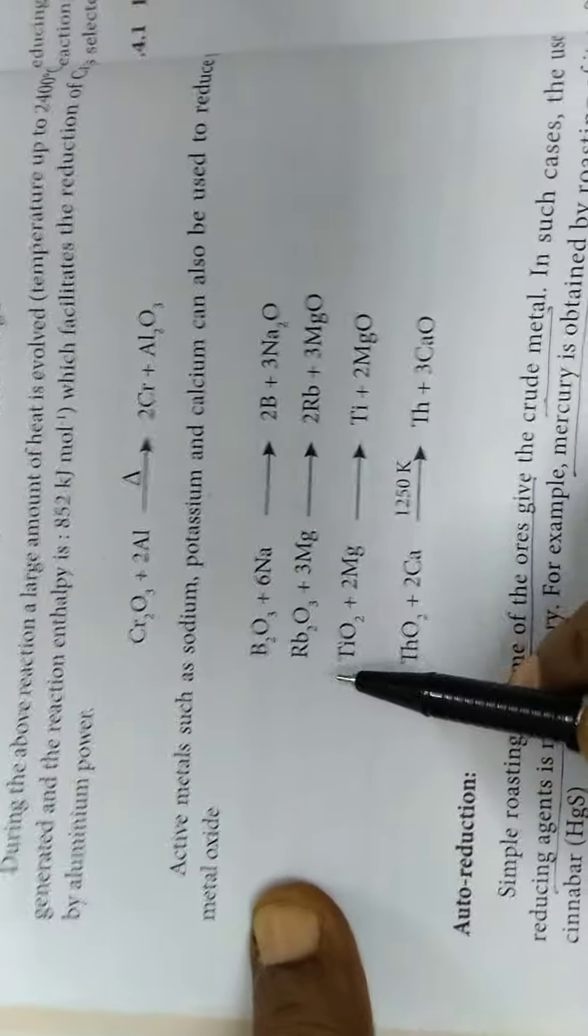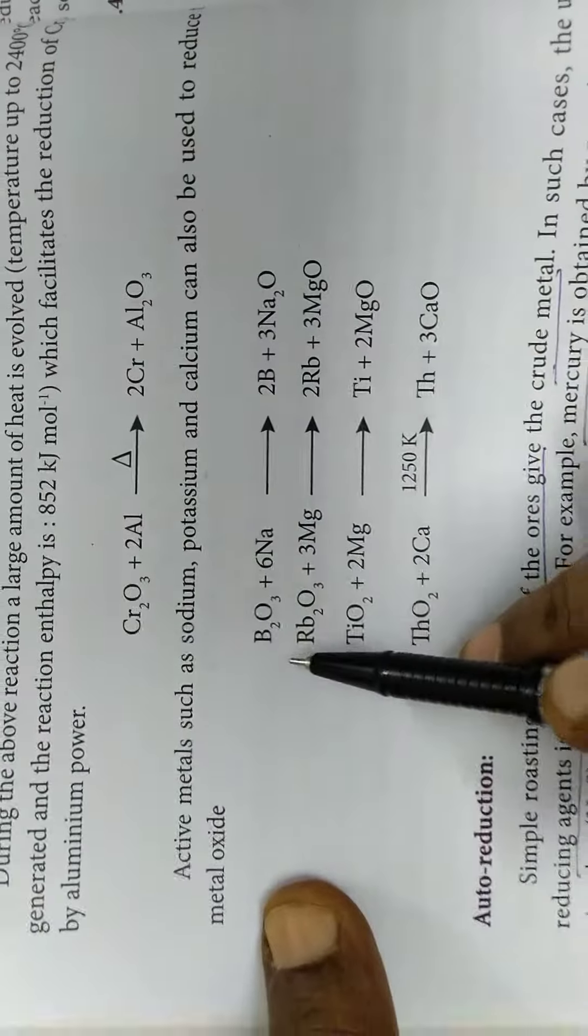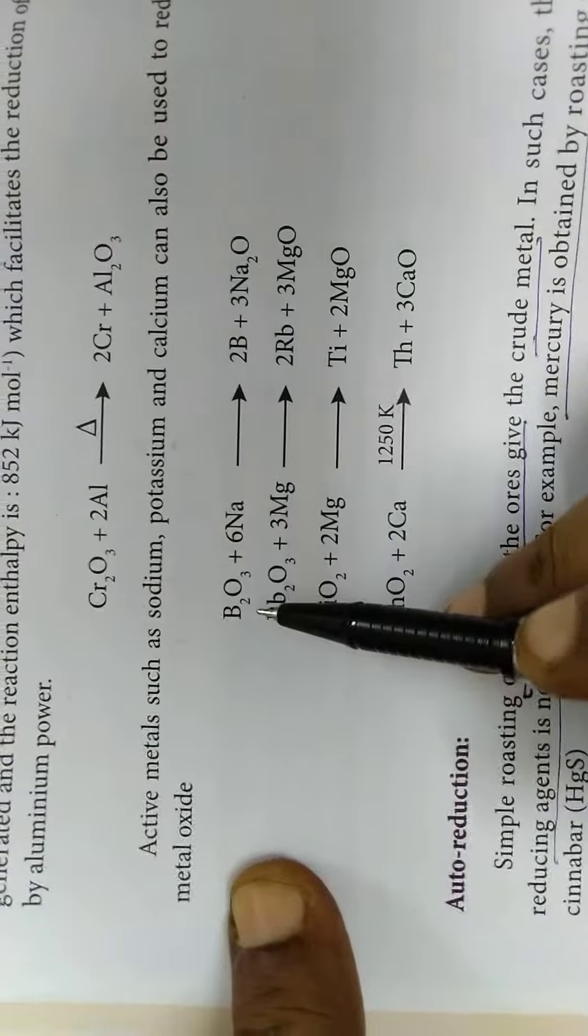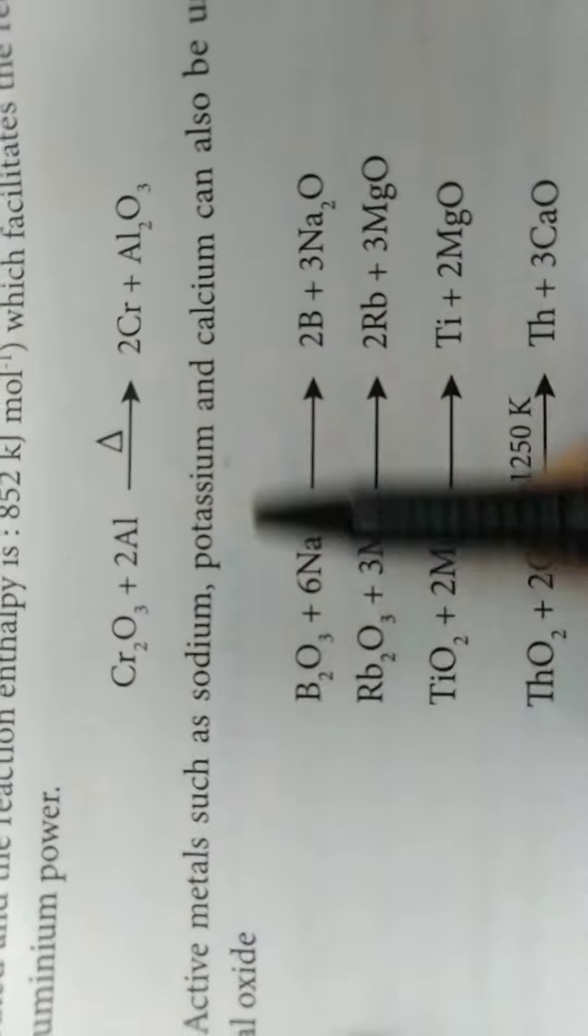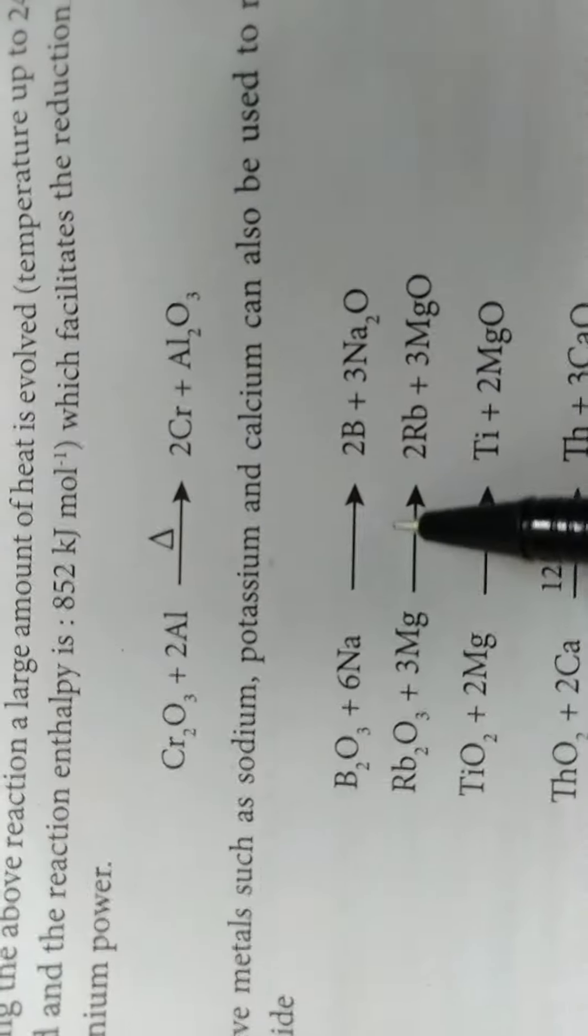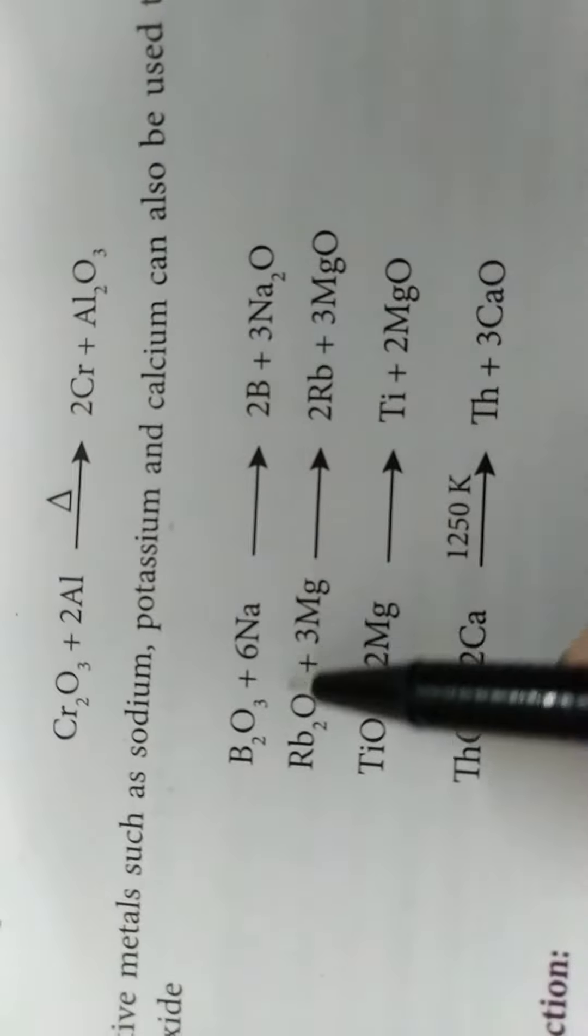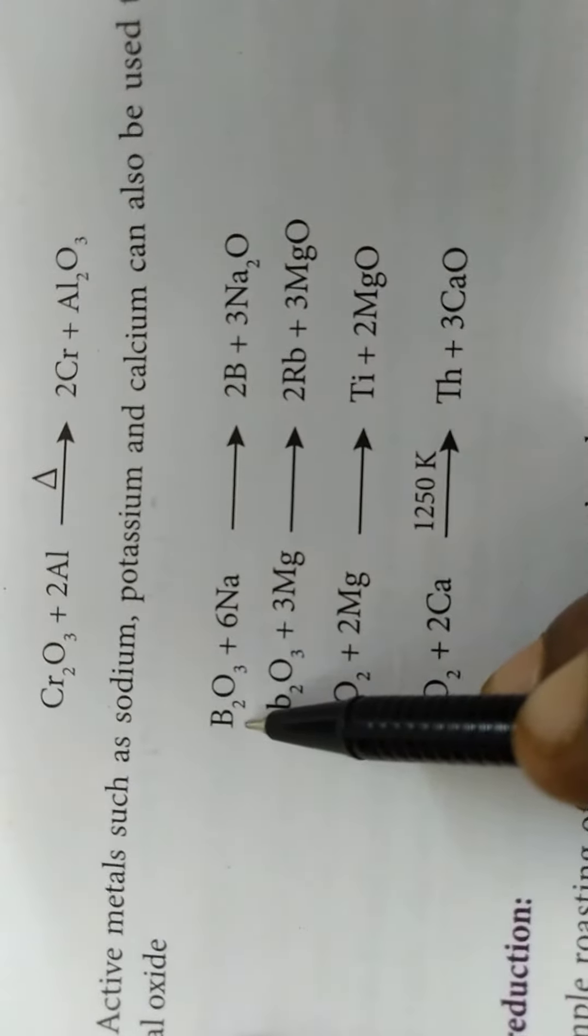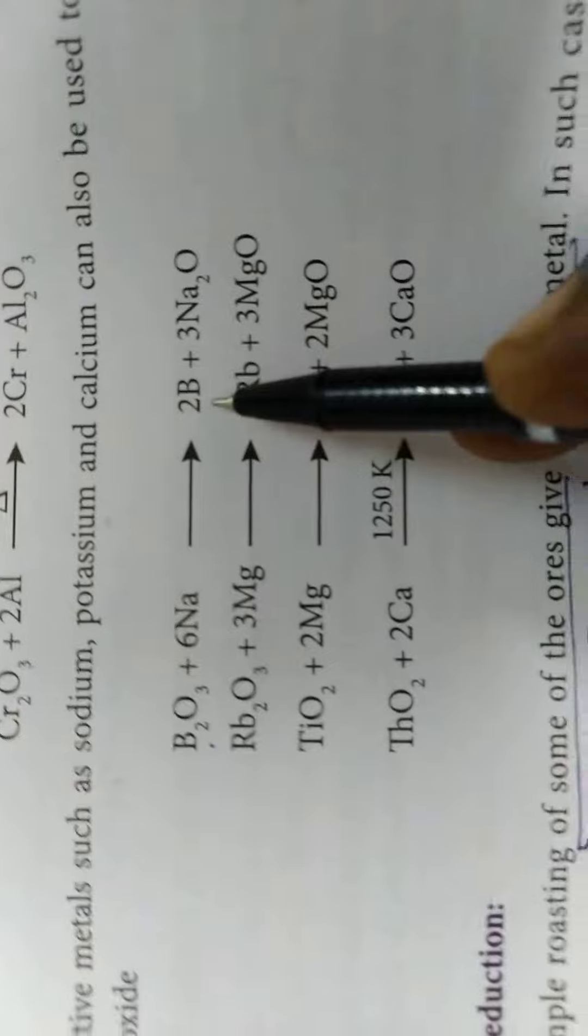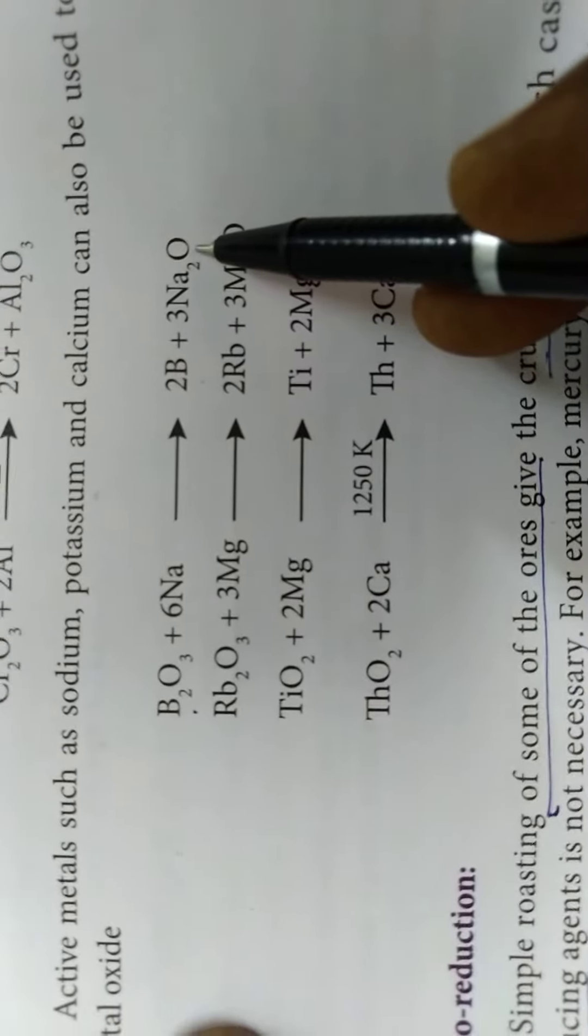During this process, whatever impurities are present will be eliminated. Here you see, Sodium, Potassium and Calcium - active metals - are converted into their oxides. Sodium with B2O3, Boron Trioxide, Boron will be separated out and Sodium Oxide will be there.